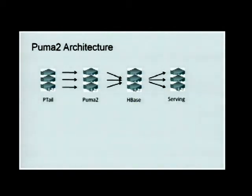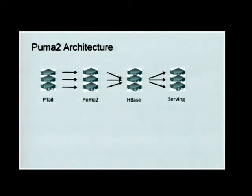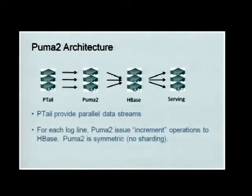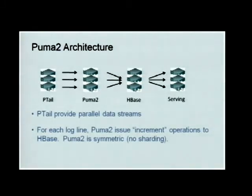The first application we built on top of that is called Puma2. The idea is simple: we get a parallel data stream from PTail — a set of symmetric machines — and for each log line in the data stream, Puma2 issues an increment operation to HBase. HBase supports the increment operation, which is internally implemented as a read and write, but from the application's point of view it's a single operation.